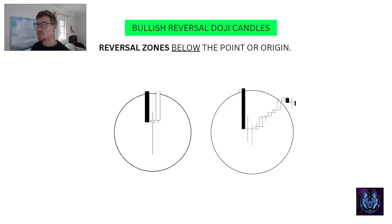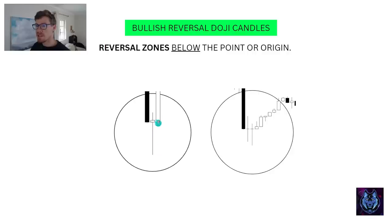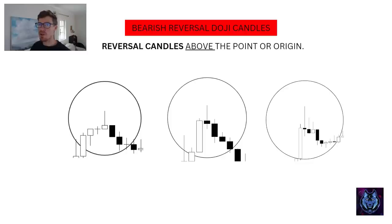Here is an example of bullish reversal candles — these are indecision candles called doji candles. These happen at the furthest swing high or swing low point from the point of origin. We've got this massive wick and this little body rejecting to the downside, which means it's going to reverse upwards. Here's bearish reversal dojis above the point of origin. Nice pin bar rejecting to the upside — these are clear signals the market is reversing.